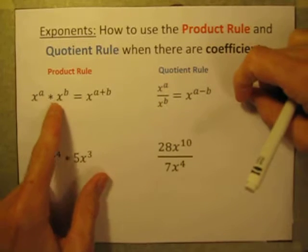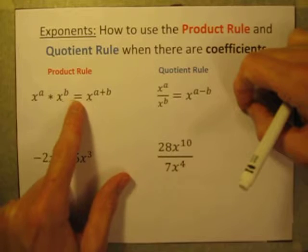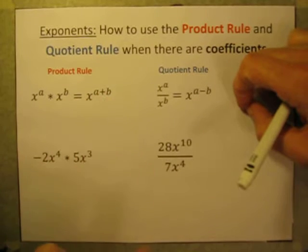So, x to the a times x to the b power is equal to x to the a plus b power.